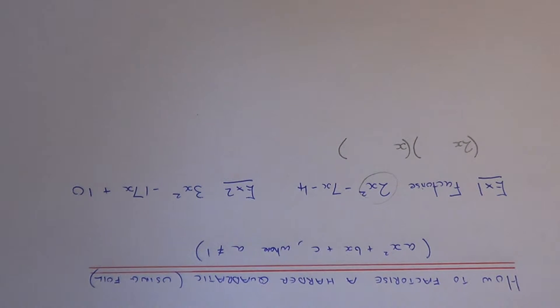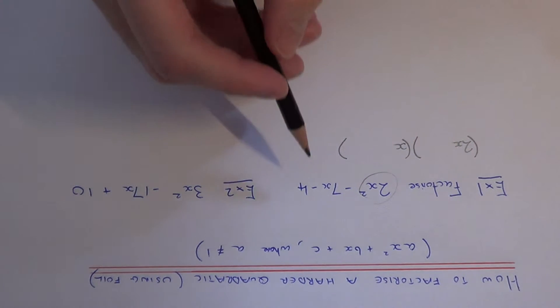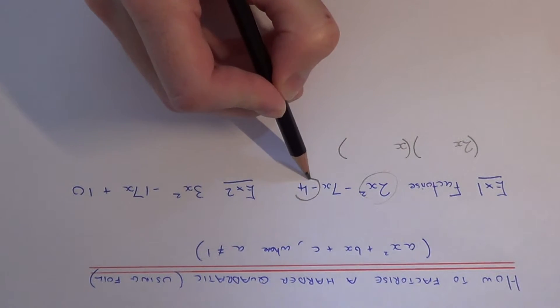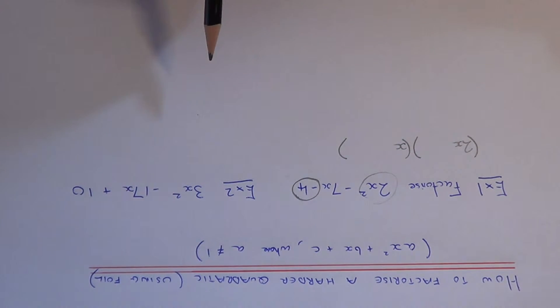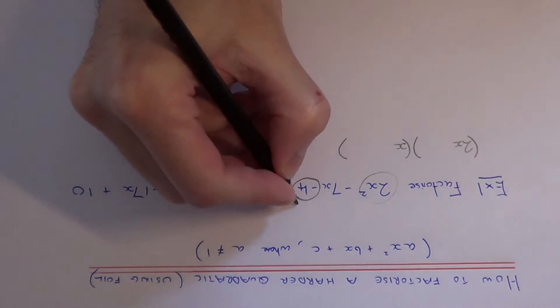The next thing we've got to do is think about our last number which is minus 4. We have to think of all the pairs of numbers which multiply to give minus 4.